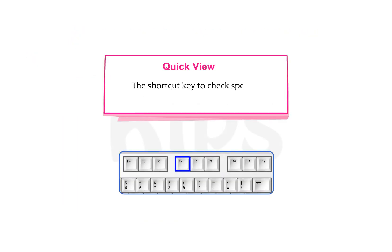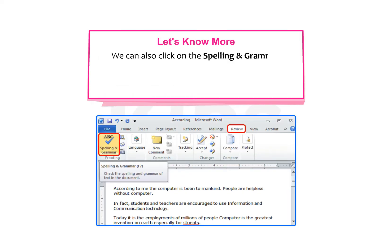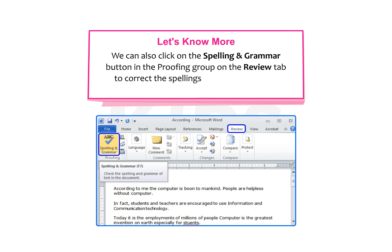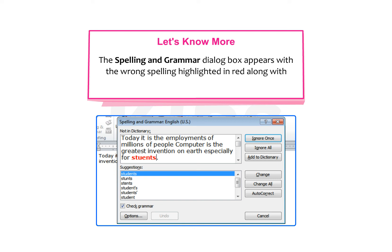Students, note that the shortcut key to check spelling and grammar is the F7 key. You can also click on the Spelling and Grammar button in the Proofing group on the Review tab. The Spelling and Grammar dialog box appears with the wrong spelling highlighted in red, along with a list of suggestions.